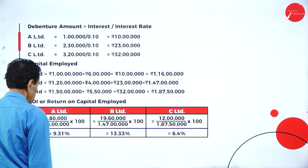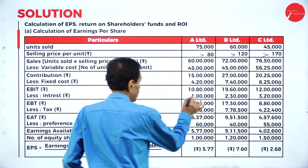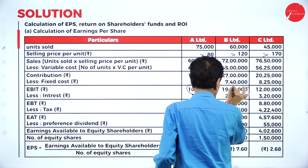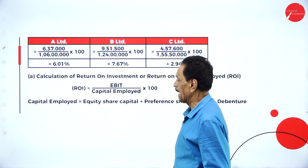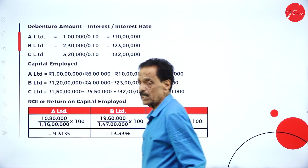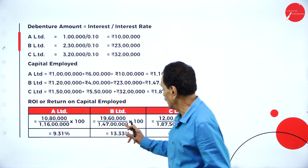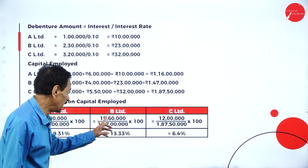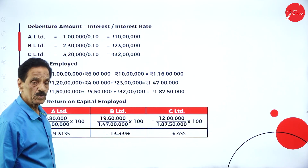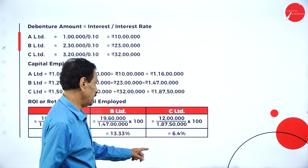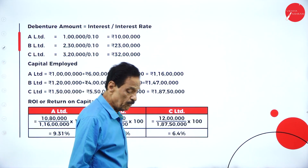Return on capital employed = EBIT divided by capital employed. A Limited: 10 lakh 80,000 divided by 1 crore 16 lakh = 9.31%. B Limited: 19 lakh 60,000 divided by 1 crore 47 lakh = 13.33%. C Limited: 12 lakh divided by 1 crore 87 lakh 50,000 = 6.4%.